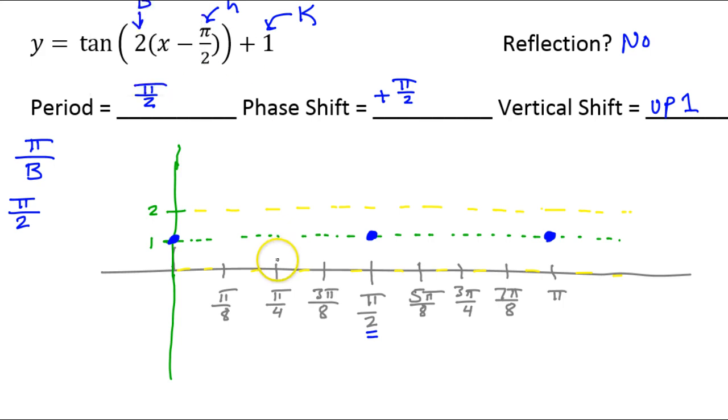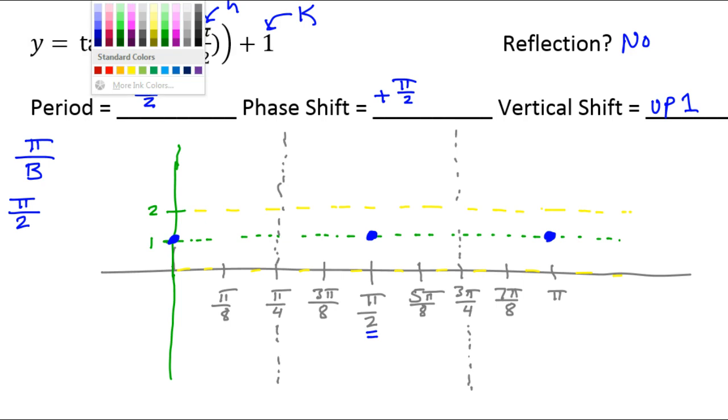Okay, so my tangent should begin and end in these places. And then right in the middle of each time, I should have a vertical asymptote. So I should have a vertical asymptote at π over 4. And I should have another vertical asymptote at 3π over 4. This is two periods of the function that's about to happen.